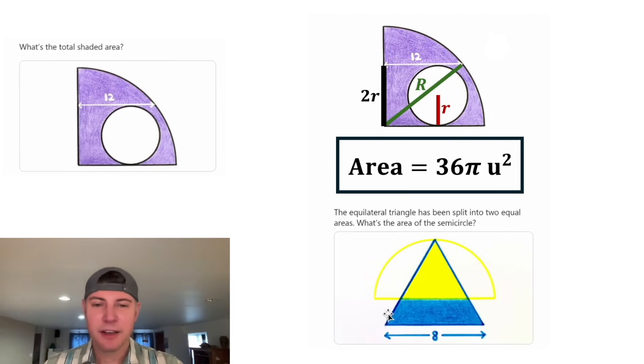And this is the next problem. It's giving us an equilateral triangle with side lengths of 8. And it's split up such that the yellow area is equal to the blue area. And it wants us to find the area of this semicircle. How exciting.